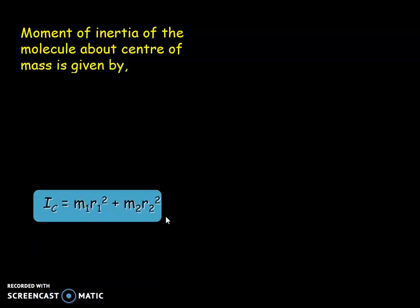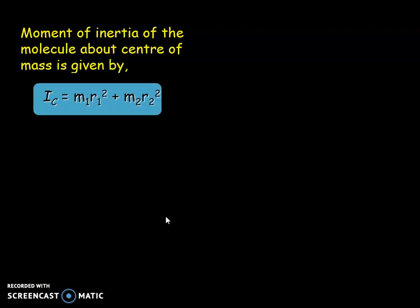The moment of inertia of the molecule about center of gravity or center of mass is given by Ic equal to M1 R1 square plus M2 R2 square. As I equal to sigma Mi Ri square that you have studied in the plus 2 classes.